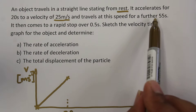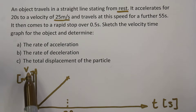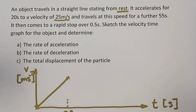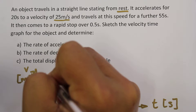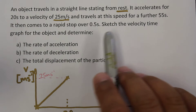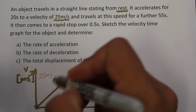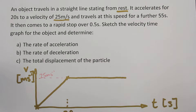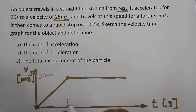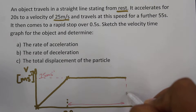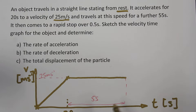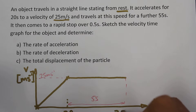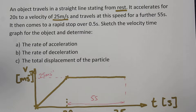We can assume constant acceleration because we are calculating one rate of acceleration for question A. It travels at this speed for 55 seconds, staying at 25 meters per second. This 55-second interval means the total time elapsed since the beginning of the motion becomes 75 seconds — 20 plus 55 equals 75.